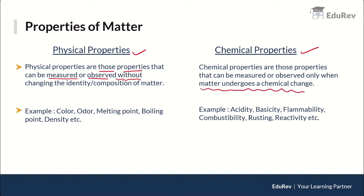Some examples of physical properties include color, odor, melting point, and density. For example, if I take water (H₂O), its physical properties are that it is colorless, odorless, and has a melting point of 0°C. These are the physical properties of water.